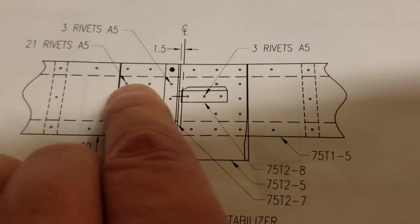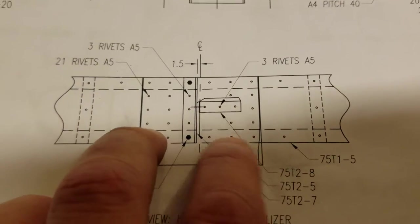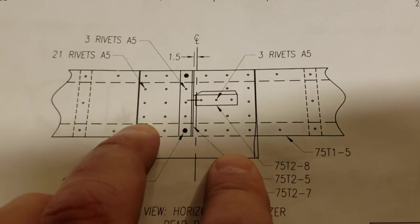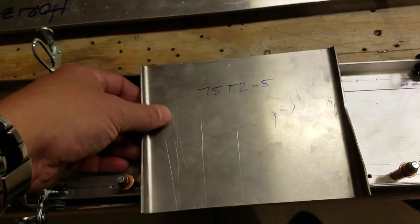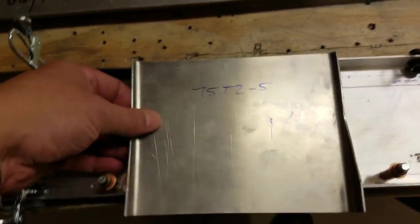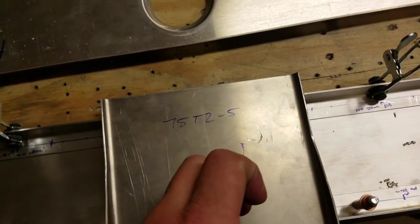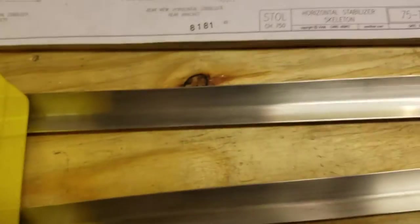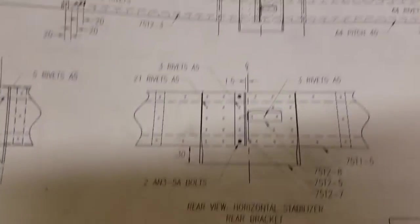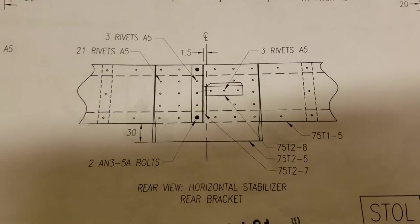When you lay out the rivet pattern for this, you've got your hinge blocks and reinforcing angle here, and then there's a total of 21 A5 rivets that are just on the mounting plate here. The reason I ended up accidentally doing that is because I didn't look closely enough at the horizontal stabilizer rear bracket rivet layout.